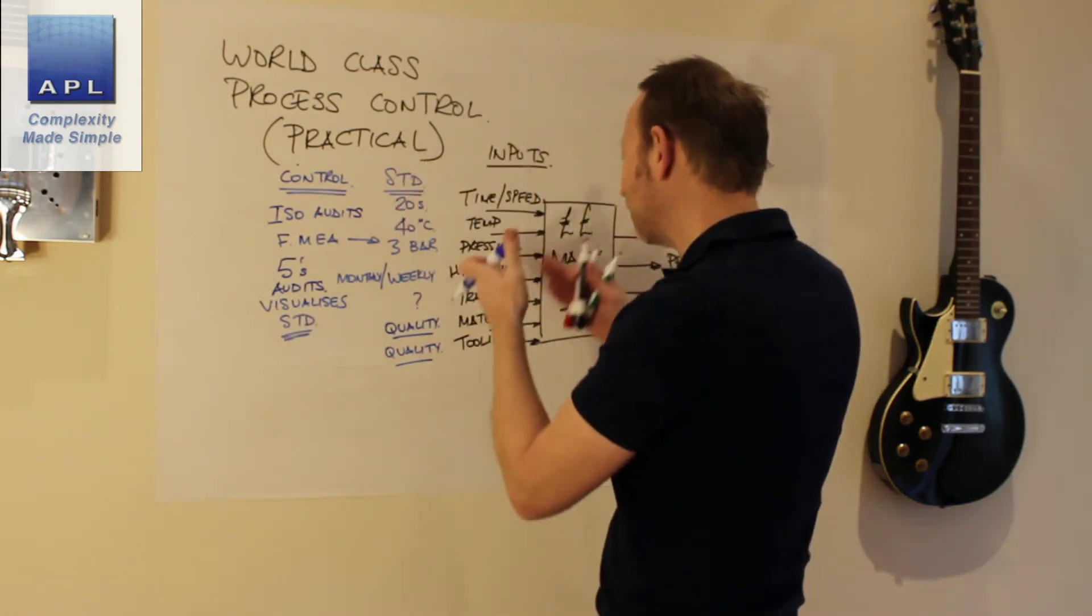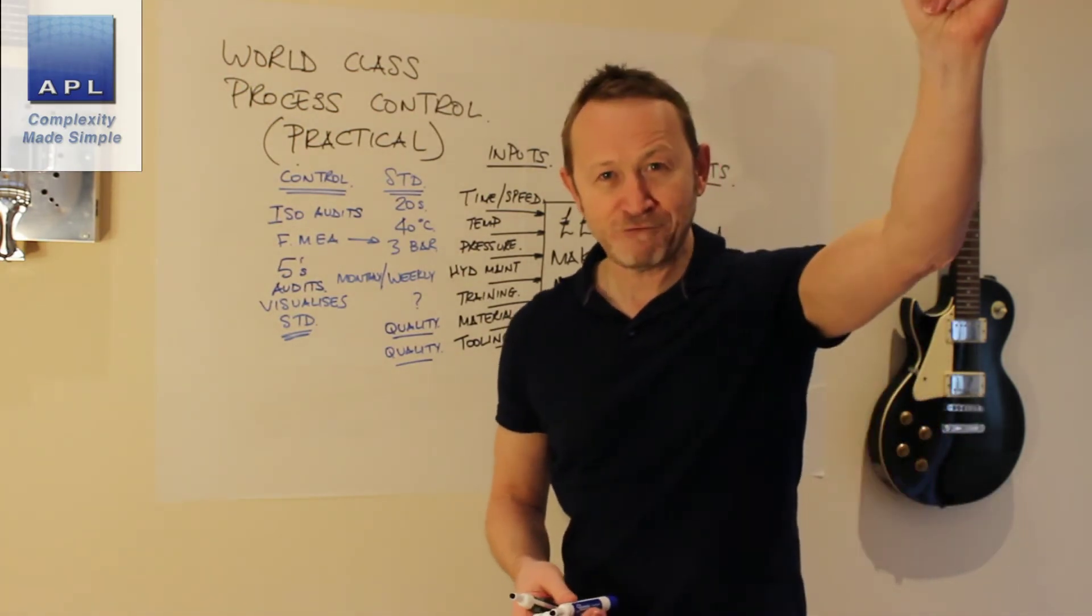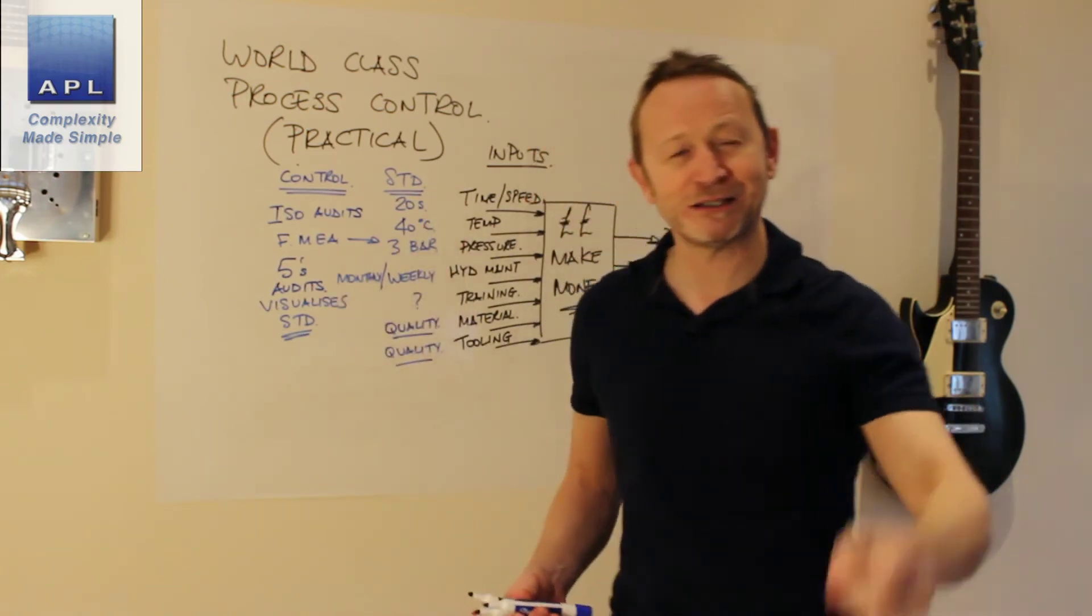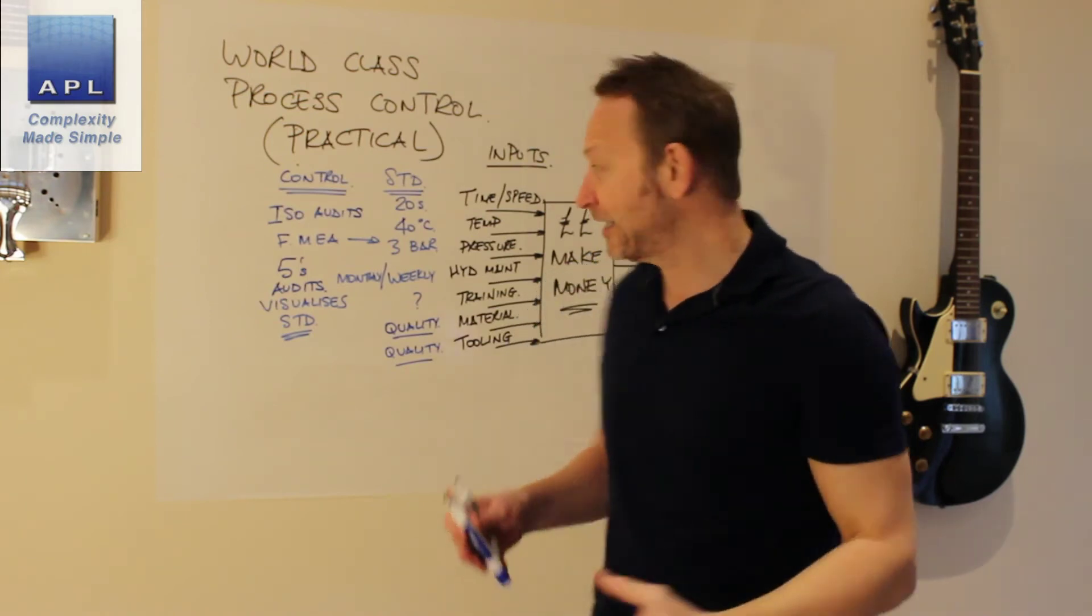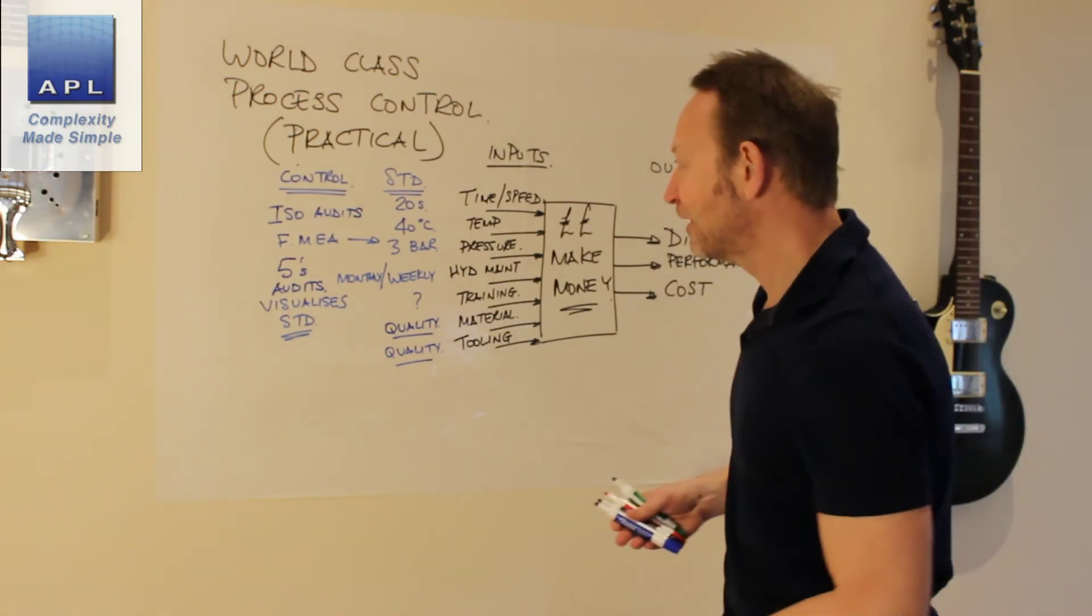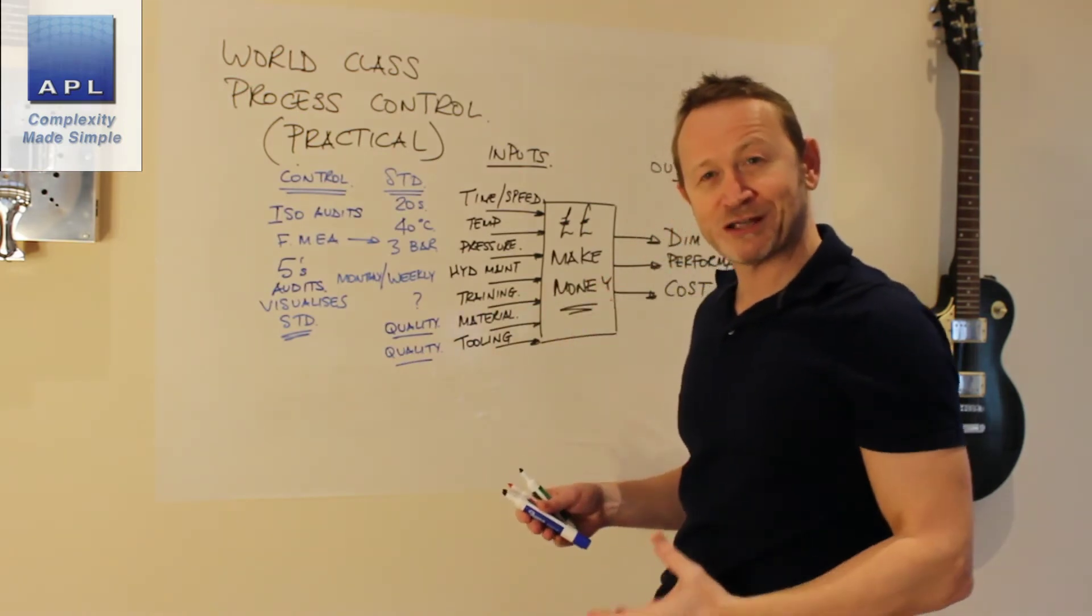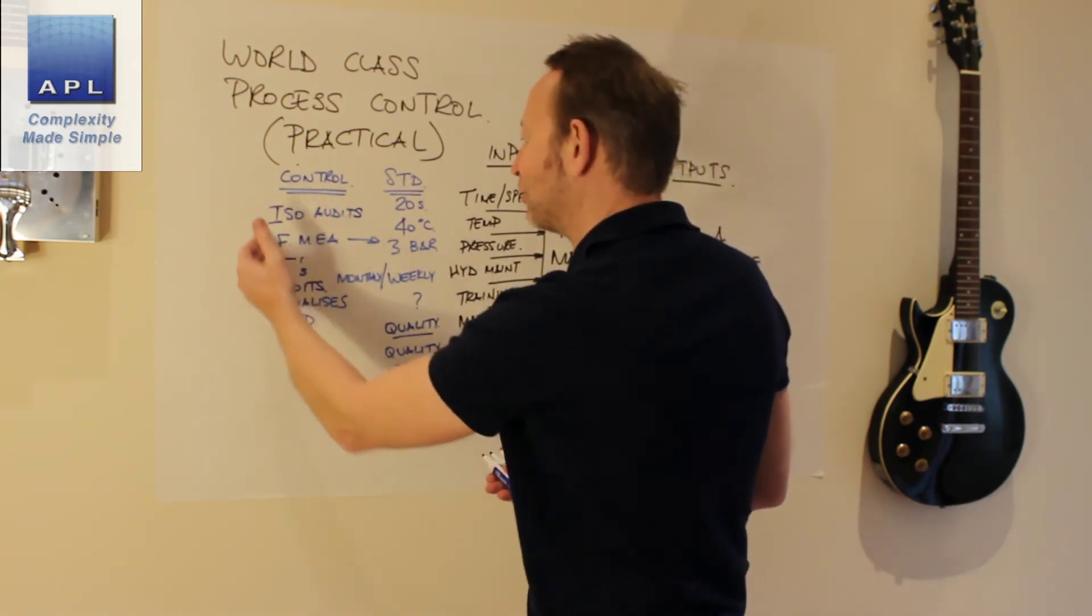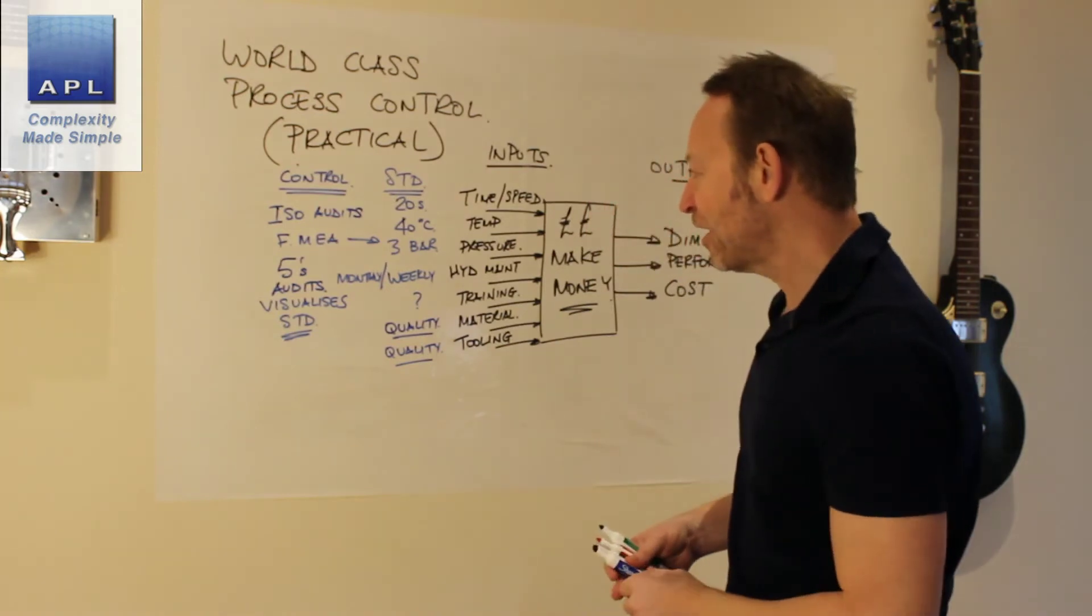Plus the other thing that 5S does is it visualizes the standard. So for example, if the maintenance is not done on the machine, maybe a red flag appears on the top of the machine. It tells everybody you have an abnormality. This machine is not allowed to run. It is not allowed to make crap as far as the customer is concerned. So what have we got? We've got standards. Then we've got systems to control those standards and to make sure they're adhered to.